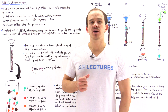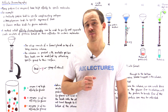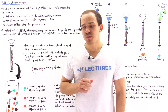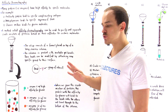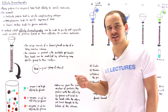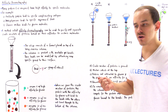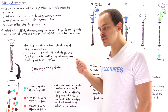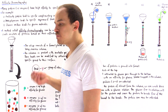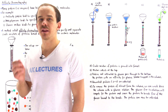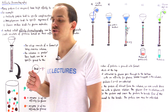So far in our discussion on protein purification processes, we discussed four different methods. We began by discussing the process of salting out, in which we separate the proteins based on their solubility and salt concentrations.